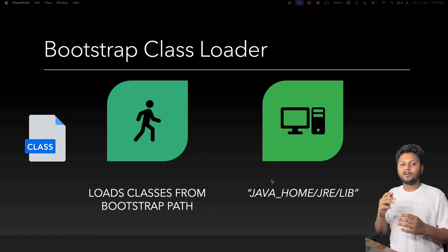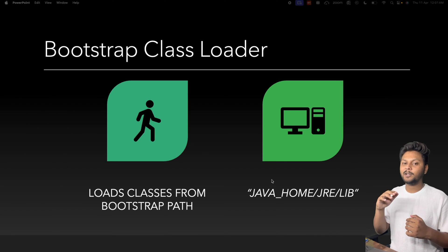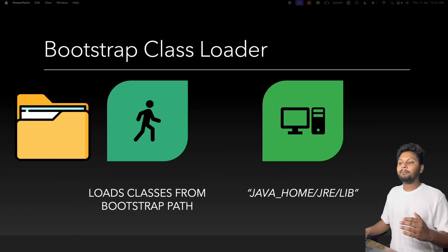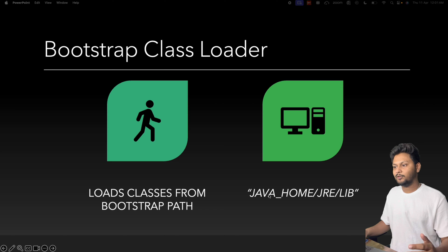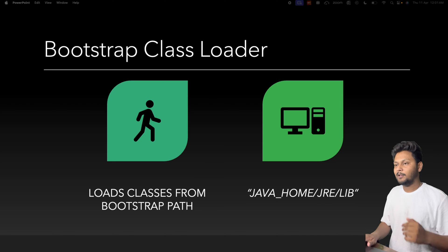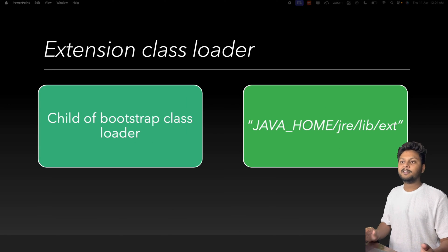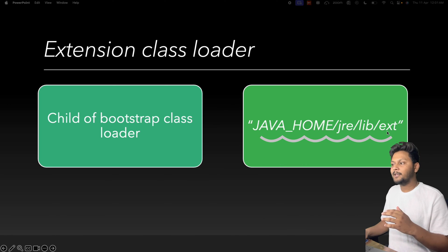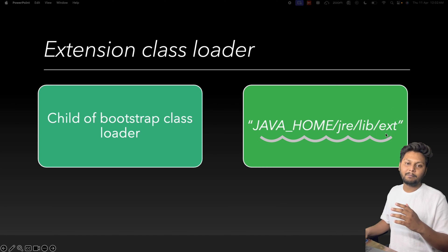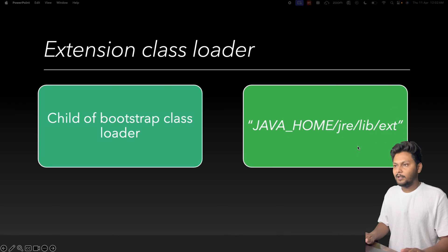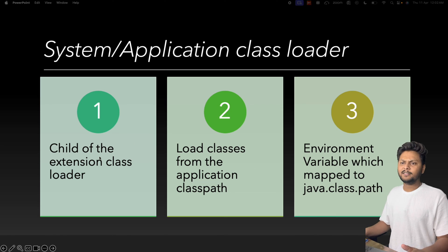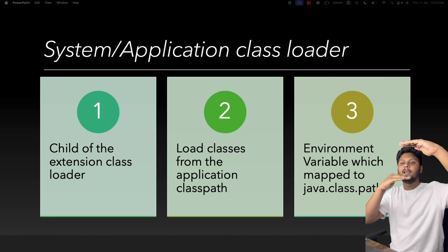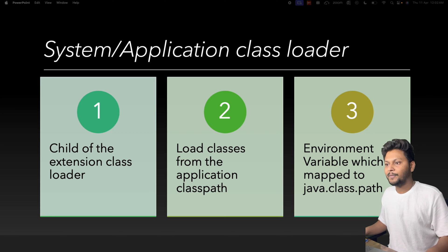The class loader's basic job is to pick up class files from a certain path. The bootstrap class loader picks up class files from the bootstrap path: JAVA_HOME/jre/lib. The extension class loader is a child of bootstrap and checks the path jre/lib/ext, which is a configurable path. The system or application class loader is a child of the extension class loader.